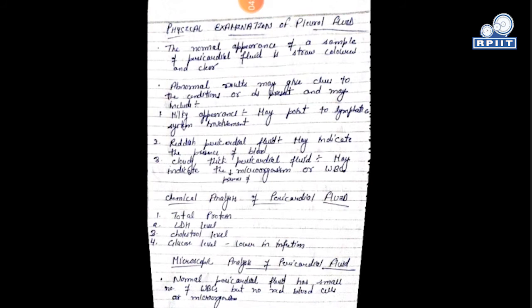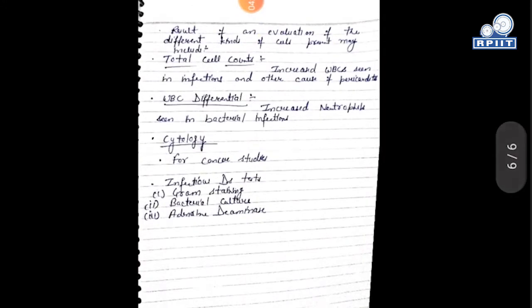Microscopic analysis of pericardial fluid: normally the fluid has a small number of WBCs, but red blood cells are not normally present. An increased total cell count of WBCs can indicate infection or other causes such as pericarditis. WBC differential helps identify the cause. For cancer studies, cytology is performed. For infectious disease testing, gram staining, bacterial culture, and adenosine deaminase testing are done — the latter is used for tuberculosis.